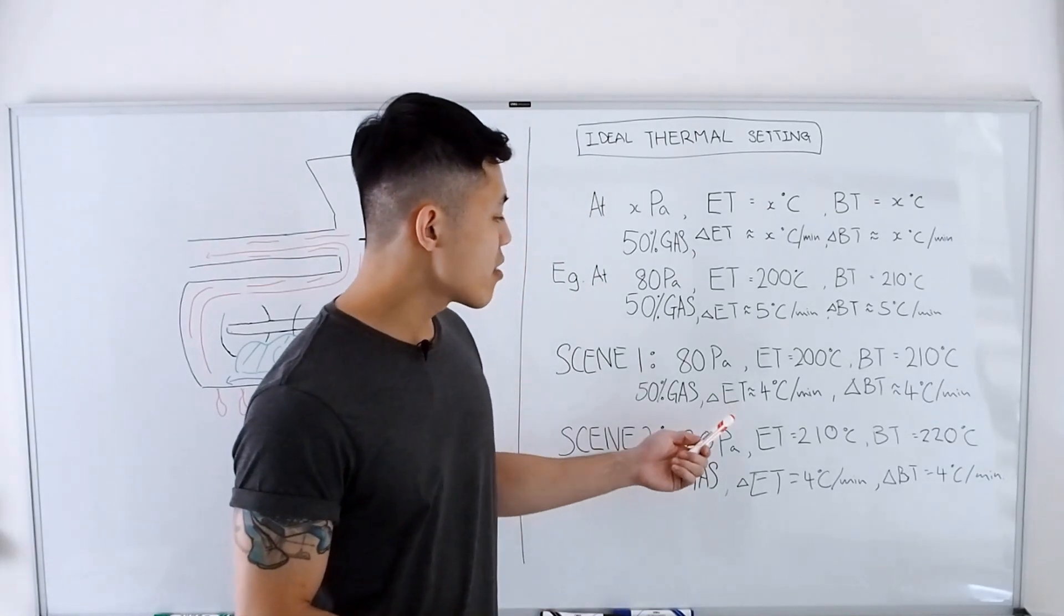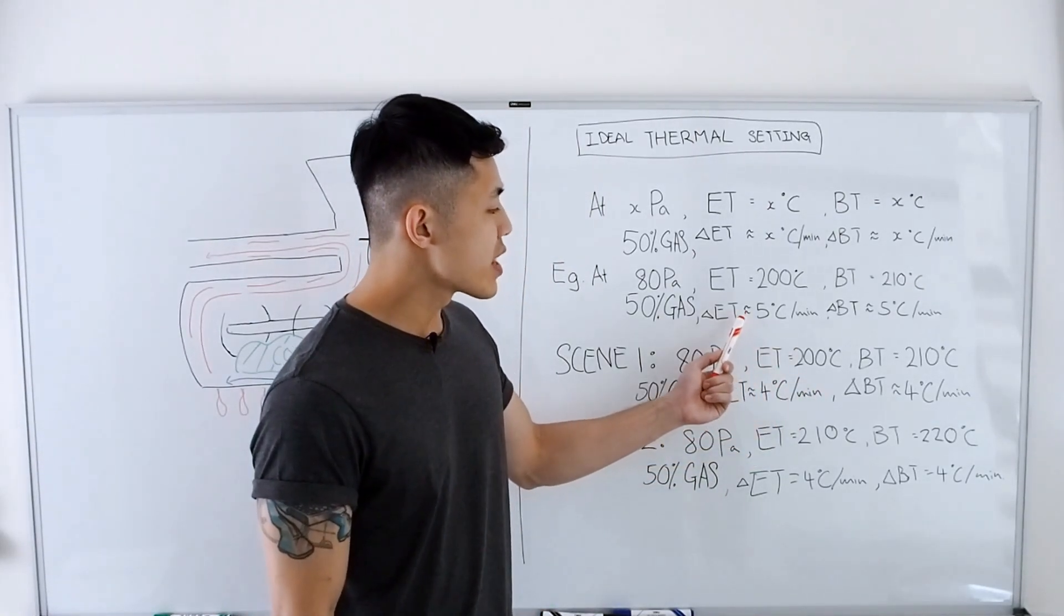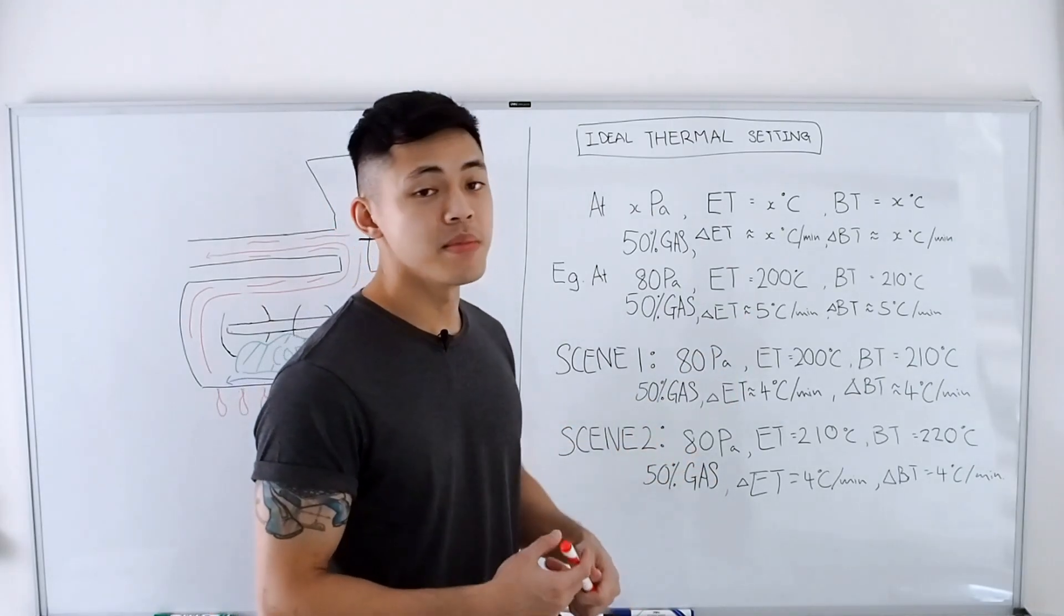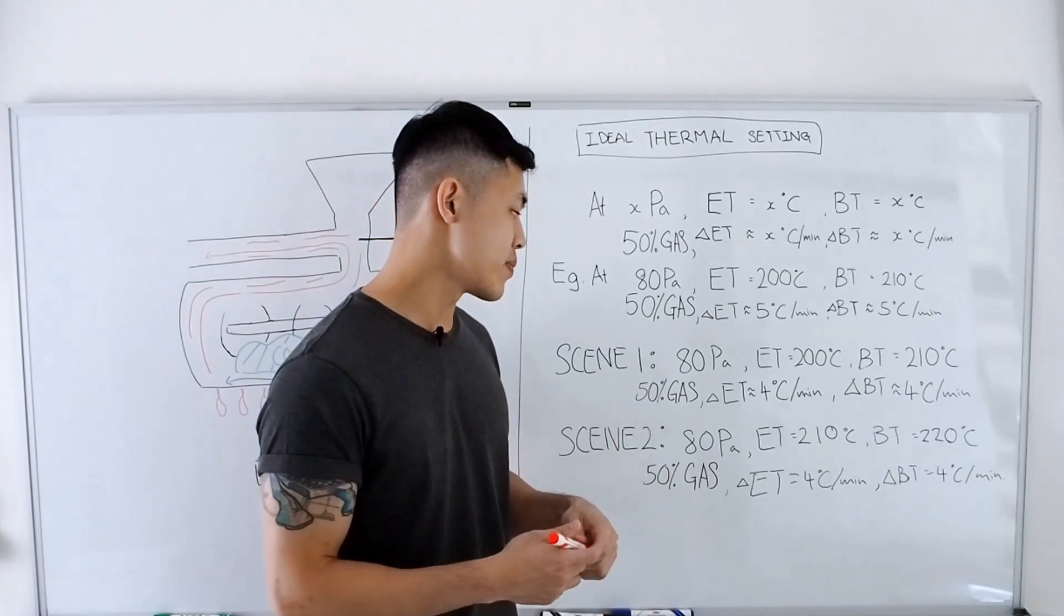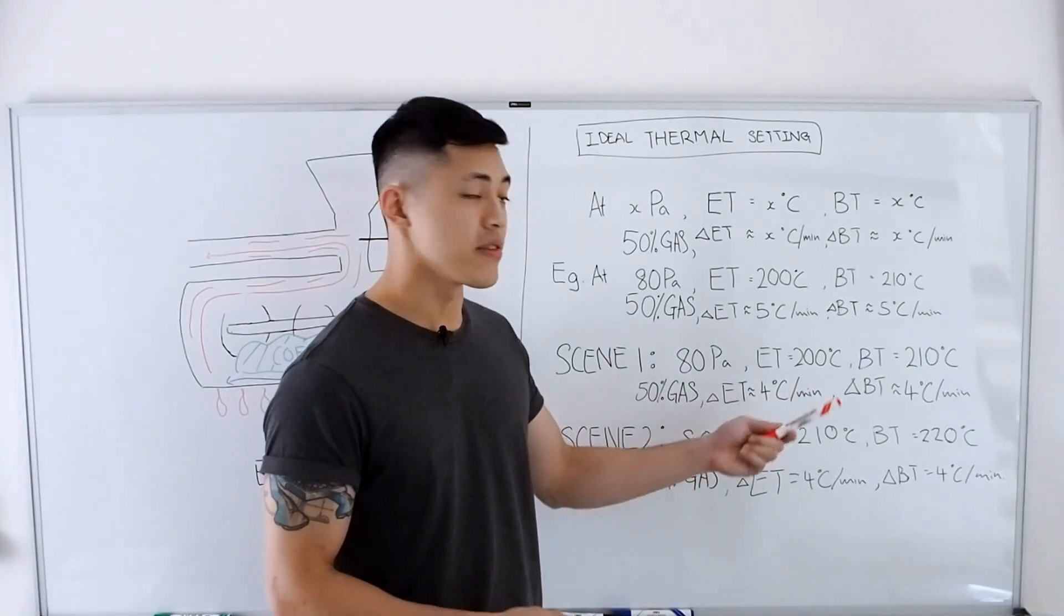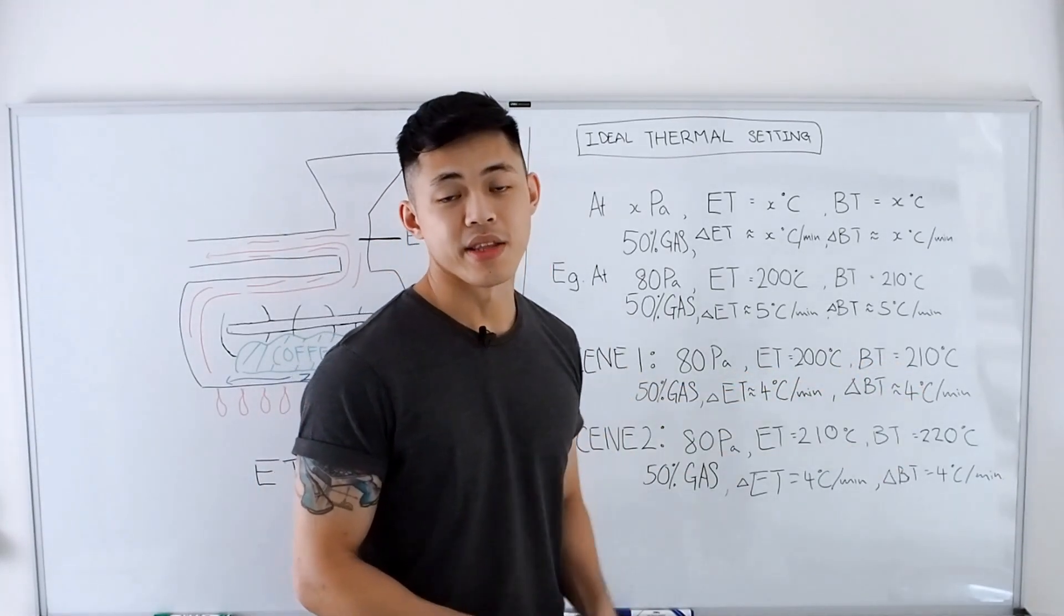But the rate of rise, or the delta ET and BT, are lower than what we want. In this case it means that the thermal energy within the drum roaster is insufficient, hence the slower rate of heating up of the drum roaster, even though these two temperatures are the same.